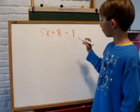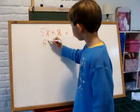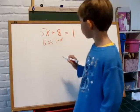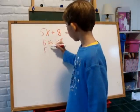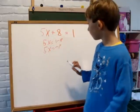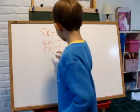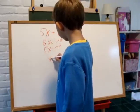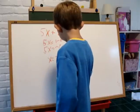First, we subtract 8 from both sides to isolate the variable. 5x equals 1 minus 8. 5x equals negative 7. Then we divide both sides by 5 and get x equals negative 7 fifths.